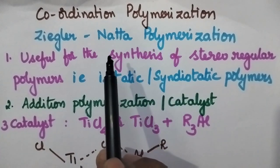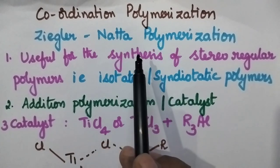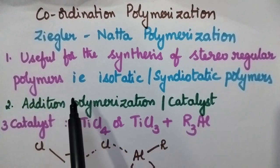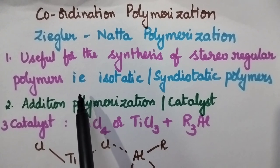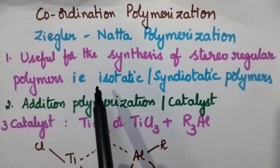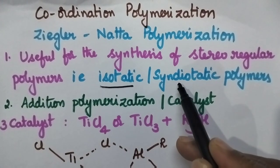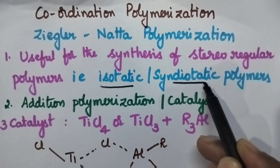Especially this Ziegler-Natta polymerization is highly useful for the synthesis of stereoregular polymers. Stereoregular polymers means we are going to obtain the polymers with specific configuration. That means they may have isotactic or syndiotactic configuration.